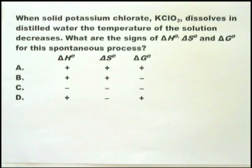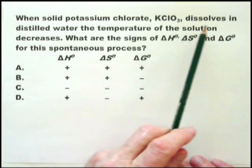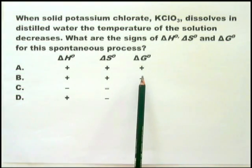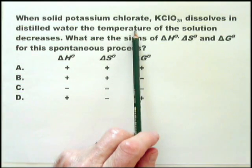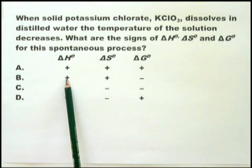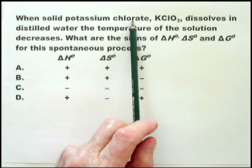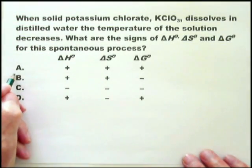This is one of those questions where the words tell you everything. Potassium chloride, KClO3, dissolves in distilled water — that is the only reaction we're dealing with. Therefore, delta G is negative for this reaction, so it's either B or C. The second thing is that the temperature decreases, so delta H is positive. And we know that when a salt dissolves in water, delta S is positive. Therefore, the answer is definitely B.